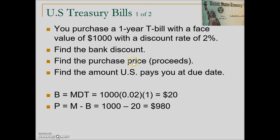That means the purchase price that we pay to the U.S. government is the proceeds. The face value of this Treasury bill is $1,000; it's discounted, so the U.S. government only has the use of the proceeds — $980 — and that is our purchase price that we give to the government to use as a loan. What will the U.S. pay when one year has transpired? They will pay the maturity value. The government for a year had the use of $980 of this $1,000 face value T-bill, and at the end of the year they will pay back the proceeds of $980 plus that bank discount — the cost of this loan — giving us the maturity value of $1,000.